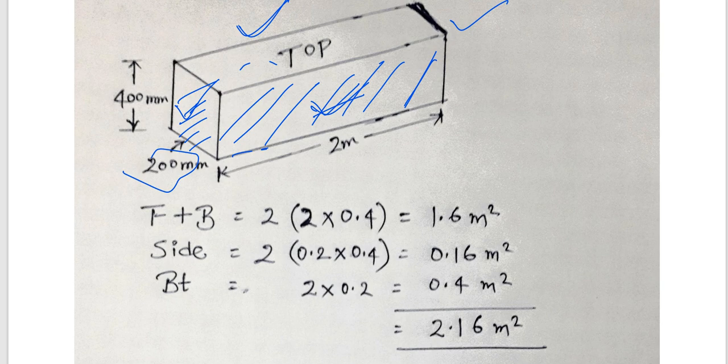Now let's calculate the formwork area. Front plus back faces: 2 times (2 × 0.4), because the length is 2 meters and the depth is 0.4 meters.